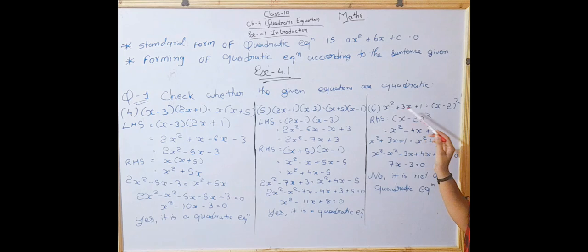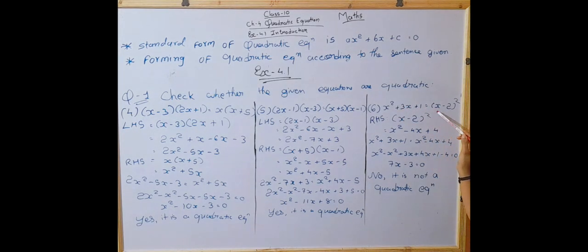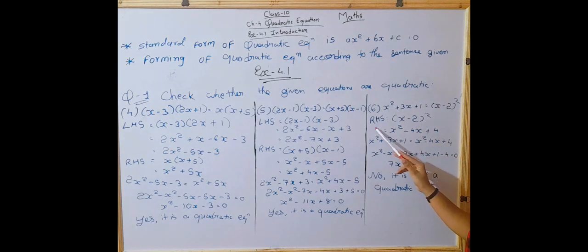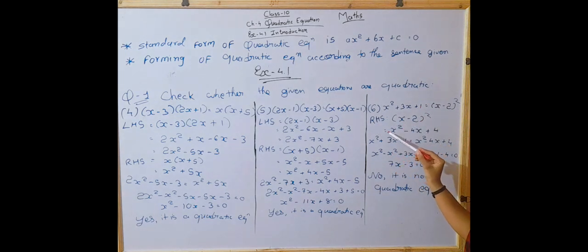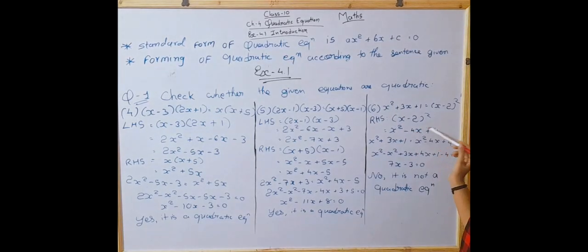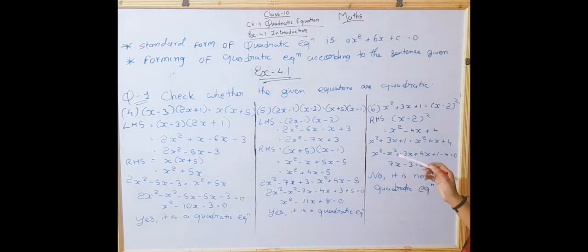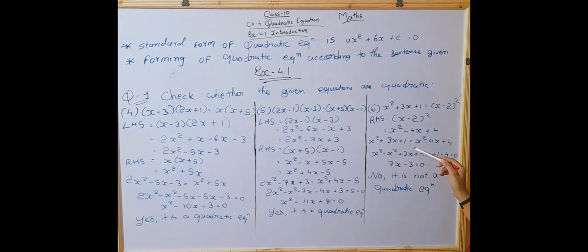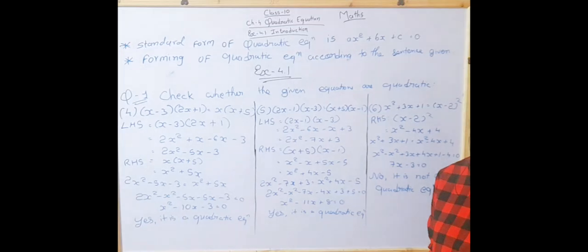Number 6: X² + 3X + 1 = (X - 2)². Equating the right-hand side: (X - 2)² = X² - 4X + 4. Equating both left-hand side and right-hand side together, X² + 3X + 1 = X² - 4X + 4 gives 7X - 3 = 0, and it is not a quadratic equation.